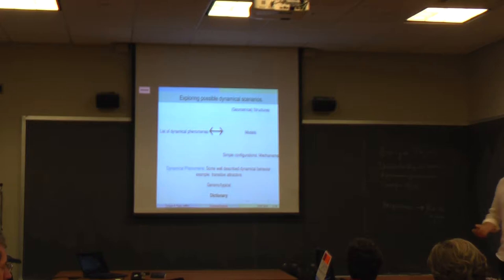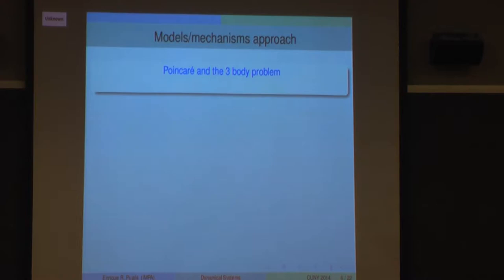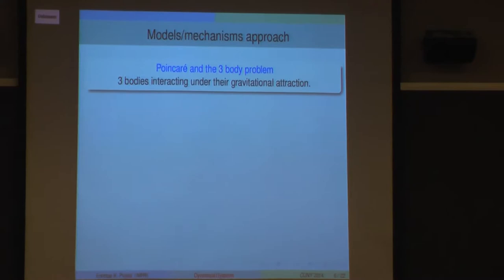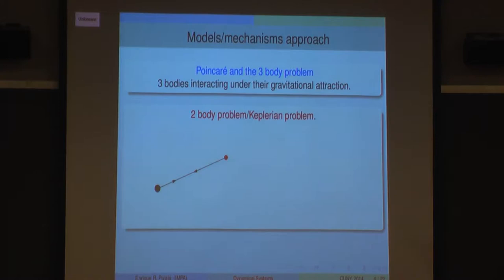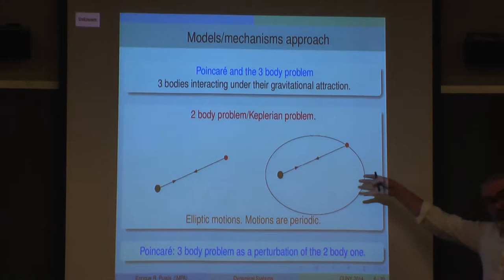This mechanism approach goes back to Poincaré and the three-body problem. The two-body Keplerian problem was well understood: one fixed body, another attracted by gravitational force, and for negative energy the dynamic is periodic motion. The starting point of Poincaré was to see the three-body problem as a perturbation of the two-body problem. He focused on the restricted three-body problem, a particular case where one body is so small it doesn't affect the other two, while one of the others affects it more.